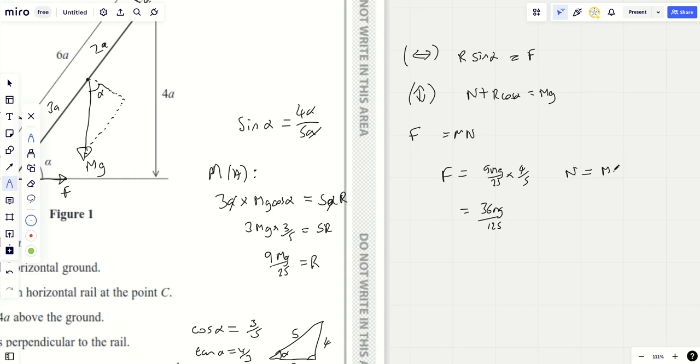Now we'll find n. n is going to be equal to mg minus r, which is 9mg over 25 times by—well, cos alpha is three-fifths. That gives me mg minus 27mg over 125, so that's 98mg over 125.